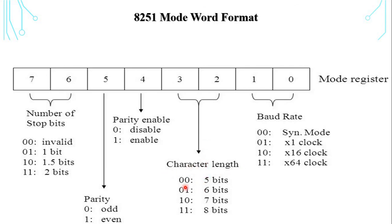D2 and D3 specify the character length: 00 means 5 bits, 01 means 6 bits, 10 means 7 bits, and 11 means 8 bits. D4 is the parity enable bit — value 0 means disabled, value 1 means parity is enabled. D5 specifies the parity type: 0 indicates odd parity and 1 indicates even parity. D6 and D7 indicate the number of stop bits: 00 is invalid, 01 is 1 stop bit, 10 is 1.5 stop bits, and 11 is 2 stop bits.